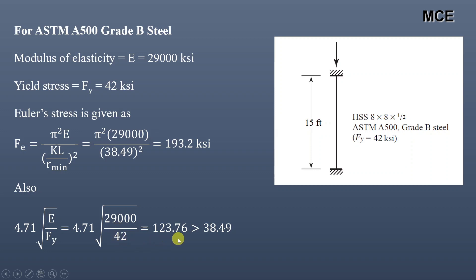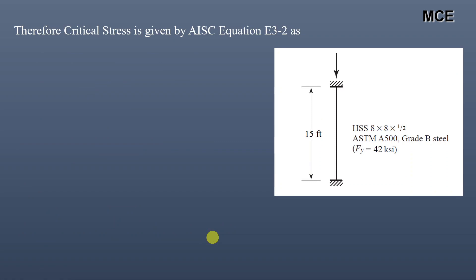This is greater than the value of slenderness ratio, so the critical stress is given by AISC's equation E3-2.